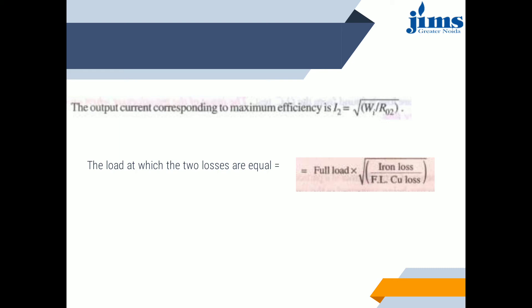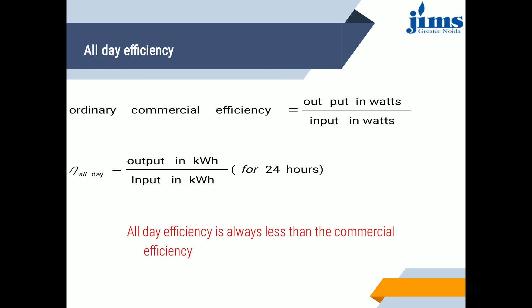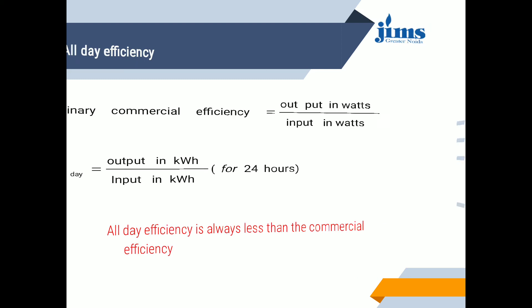It is important to note that since copper loss depends on current and iron loss depends on voltage, the total loss in the transformer depends on voltage and current and is independent of the load power factor. The transformer is therefore rated in KVA, not in KW. Ordinary commercial efficiency = output in watts / input in watts. All-day efficiency = output in KWh for 24 hours / input in KWh for 24 hours. All-day efficiency is always less than commercial efficiency.